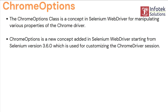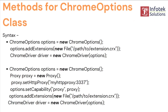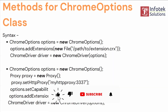The methods for Chrome Driver class work like this: we create a reference of Chrome Options, then if you want to add an extension, we say options.addExtension() and pass the file extension. Then in the Chrome Driver constructor, the options object is passed. So along with the Chrome Driver we are adding an extension — we can't add an extension straight away using Chrome Driver, so Chrome Options comes into use.